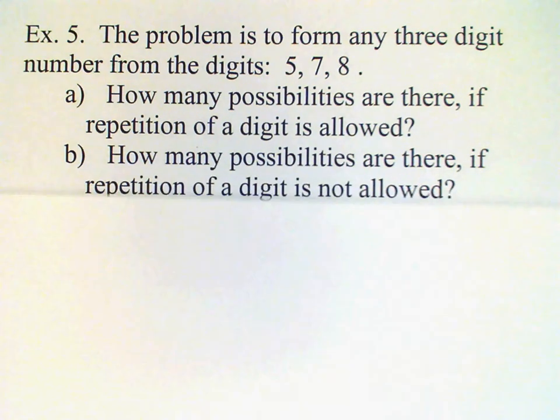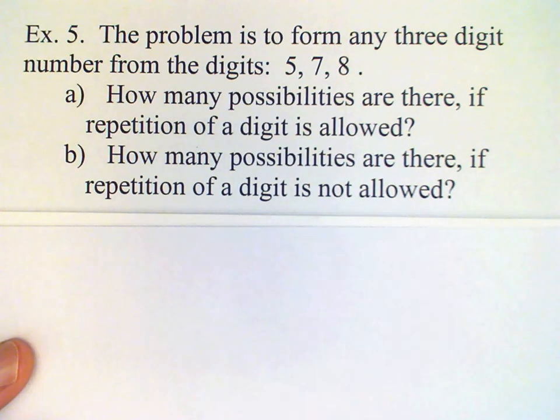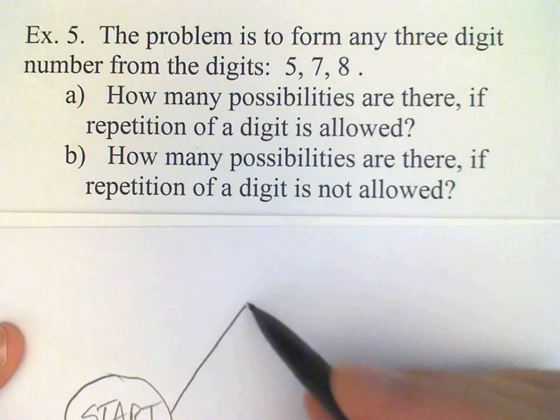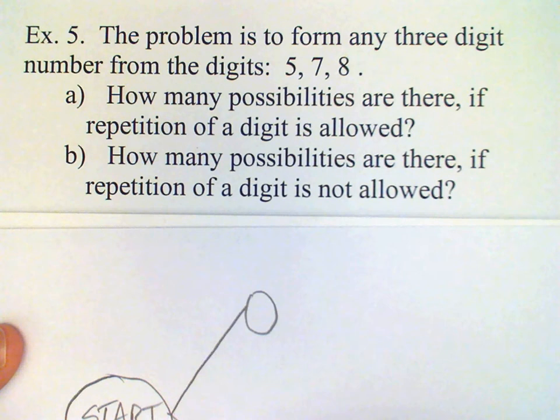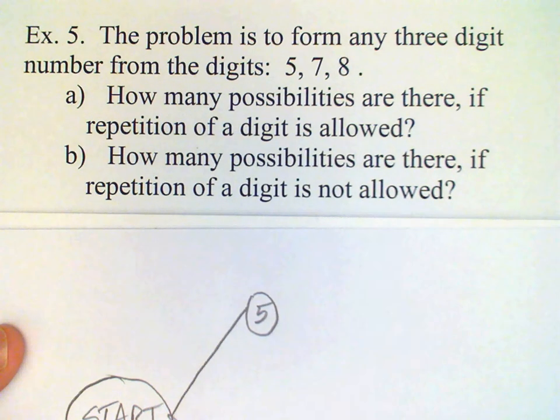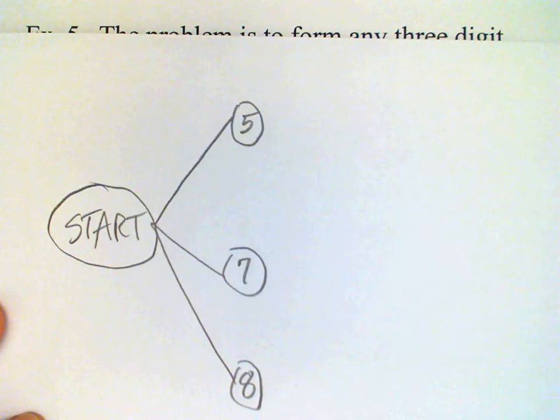Now, part two says, how many possibilities are there if repetition of a digit is not allowed? Okay, so again, I have my tree diagram, my first digit can be any one of the three because I haven't used a digit yet. Five, seven, or eight, but now for my second digit...